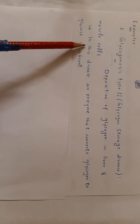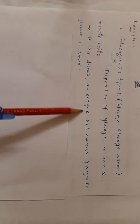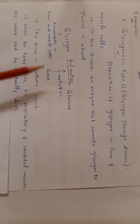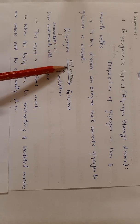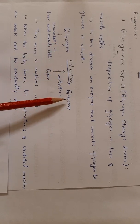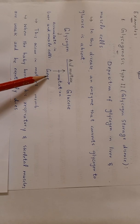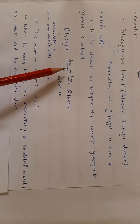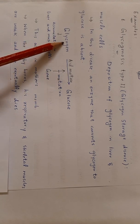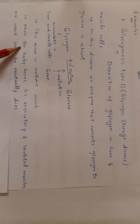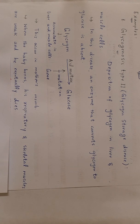In this disease, an enzyme called acid maltase, which converts glycogen into glucose, is absent due to a mutation in the gene that produces this enzyme. So glycogen accumulates in liver and muscle cells. This occurs in the mother's womb or uterus, and when the baby is born, the respiratory and skeletal muscles are weak, and the baby eventually dies.